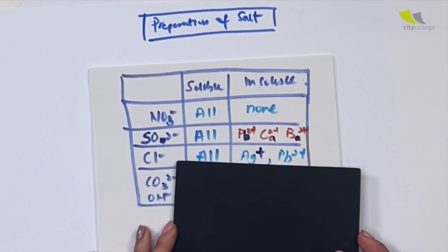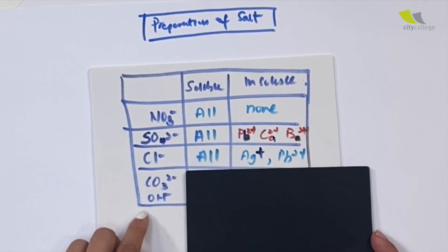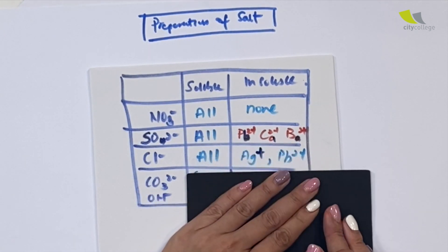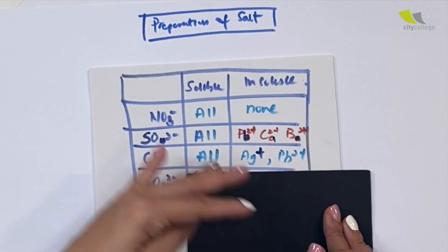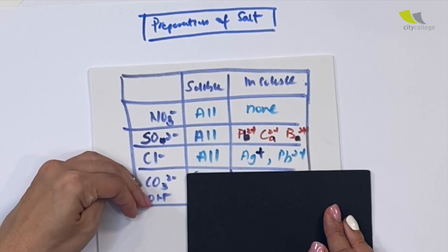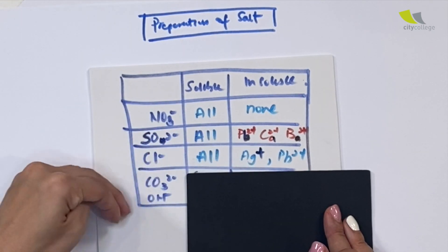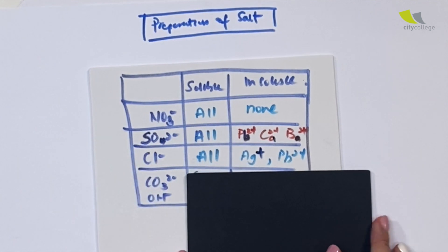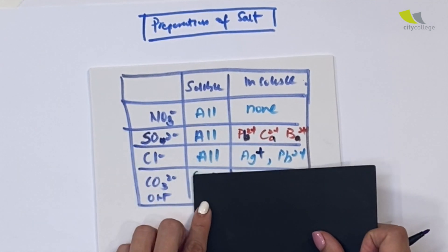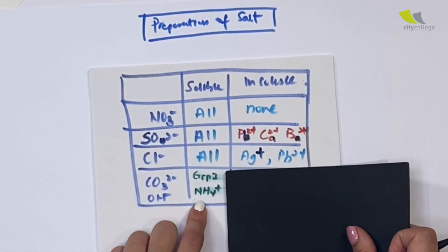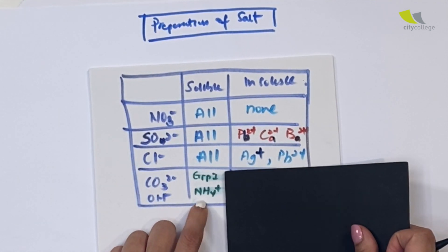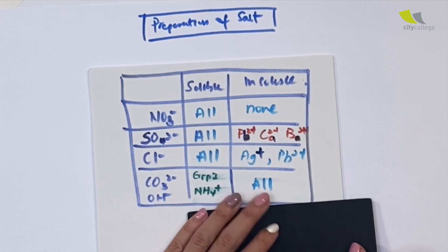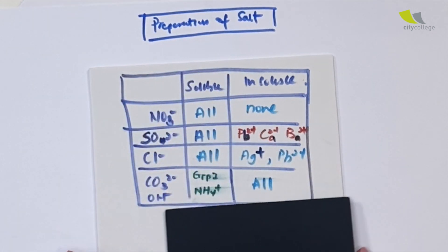Last but not least, we have our carbonate and our hydroxide. These are the most insoluble ones. The only ones that are soluble are their group one or ammonium salts. The rest are absolutely insoluble. So this table is important.